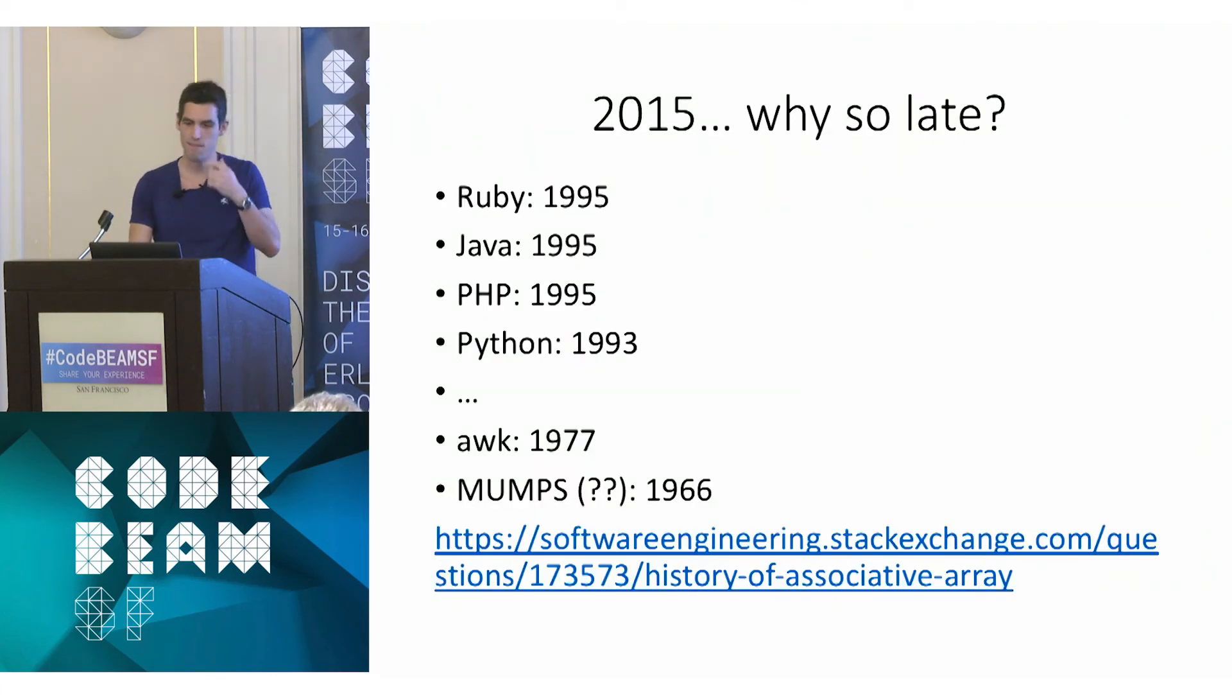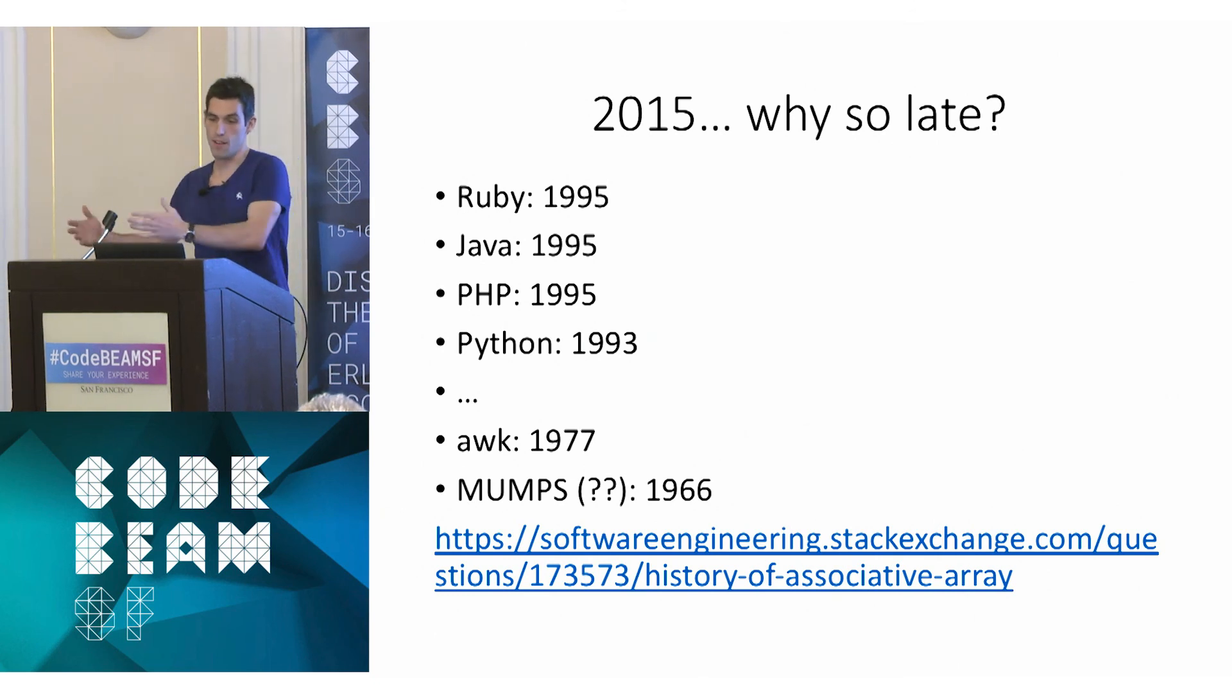Like when you compare it to other languages, Ruby got—so here when I say maps, I mean like any map-like structures. So that could be hashes in Ruby or dictionaries in Python or whatever. Ruby got them in 1995, so 20 years before Erlang. Same for Java, PHP. Python got them two years before that, 1993. And if we don't restrict ourselves to languages that are still in use today, AWK had maps back in 1977. And MUMPS, which I had not heard of before writing this slide, actually had maps in 1966. So maps have been around for over 50 years. So that really begs the question, what made it so much harder for Erlang to get the same thing that all the others had?